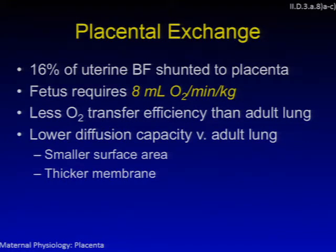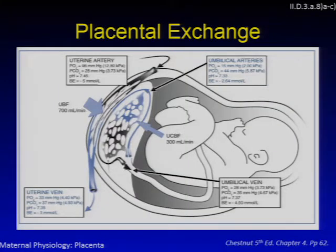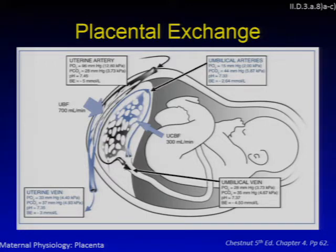16% of uterine blood flow is shunted through the placenta, and the fetus requires 8 cc's of O2 per kilo per minute versus adults who require 3 to 4 cc's. The placenta has one-fifth the O2 transfer efficiency of the adult lung due to smaller surface area and thicker membrane. O2 transfer depends on membrane surface area, membrane thickness, O2 partial pressure gradient, affinity of maternal and fetal hemoglobin, and relative blood flow. This may be a good time to pause and familiarize yourself with the umbilical and uterine vessel gas values, which sometimes appear on exams.